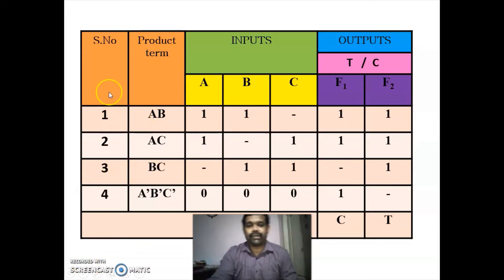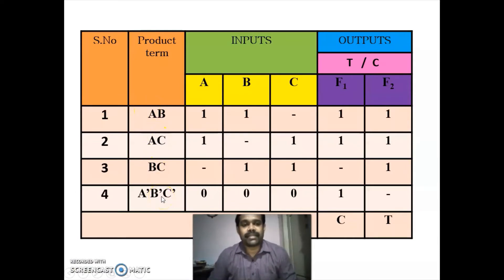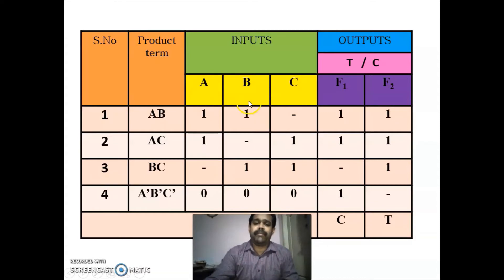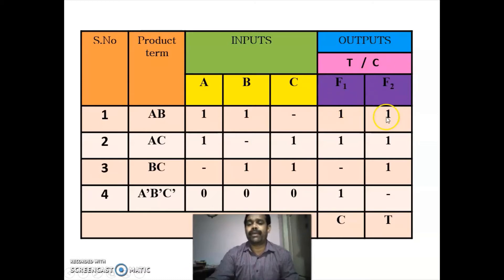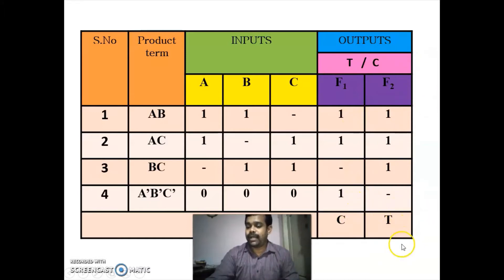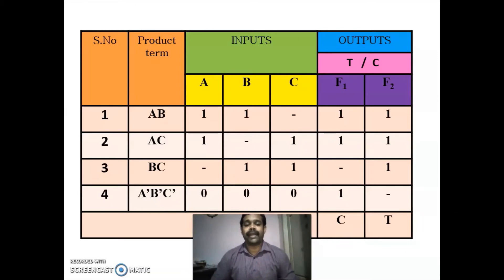Next we are going for the implementation of our PLA. The number of product terms we have is four, so our PLA must have four AND gates. The number of inputs is three: A, B and C. Our PLA will have three inputs and two outputs, so the number of OR gates will be two. F1 is in complement form and F2 is in true form, so for F1 you have to do some modification in the output.